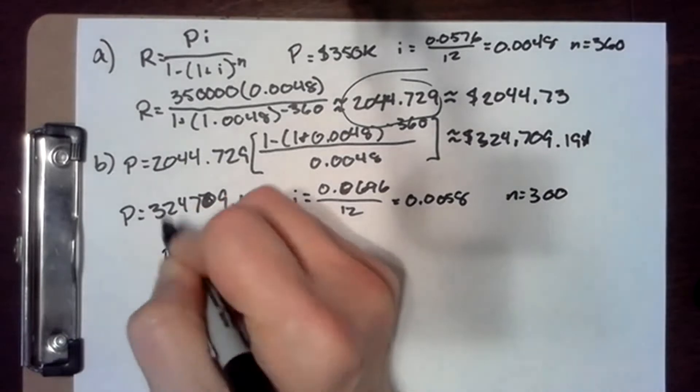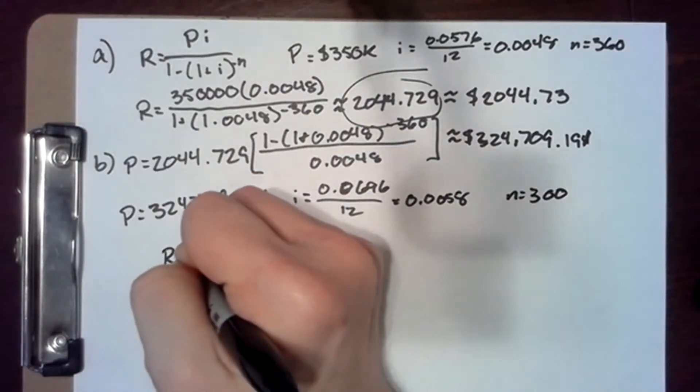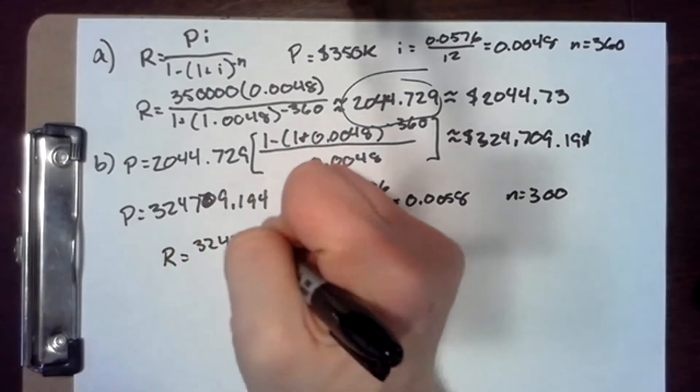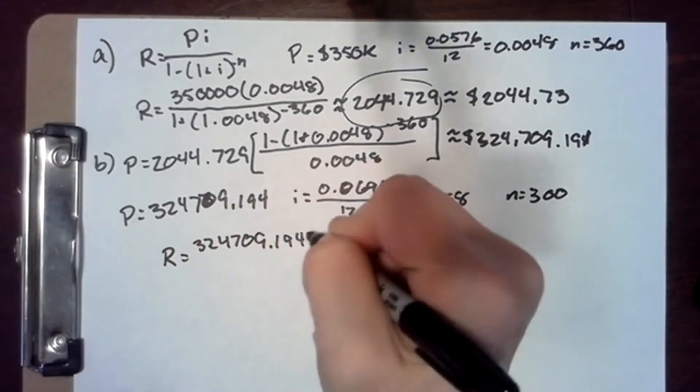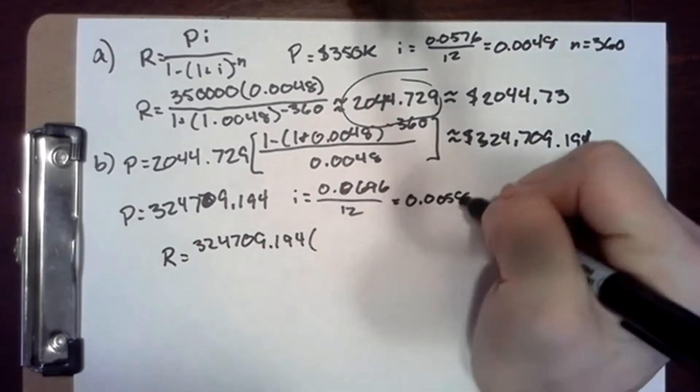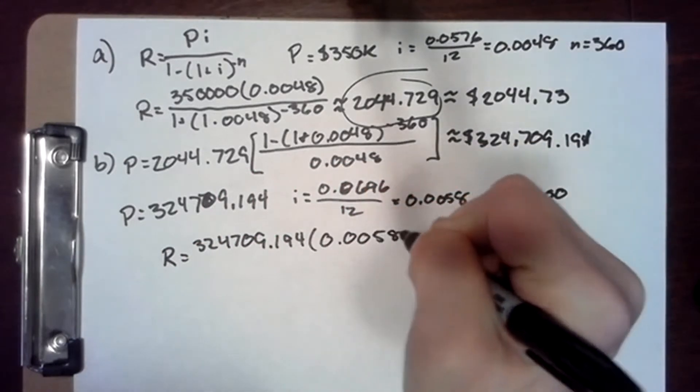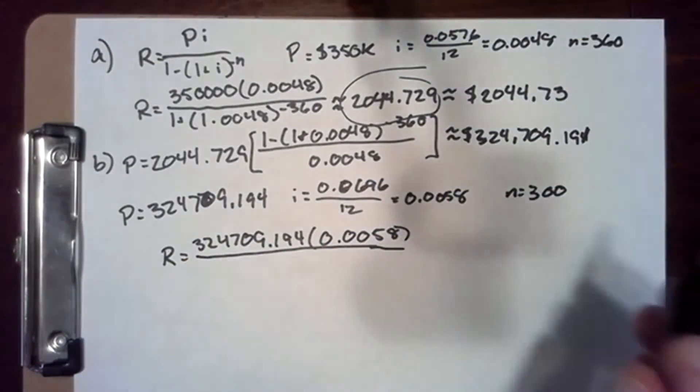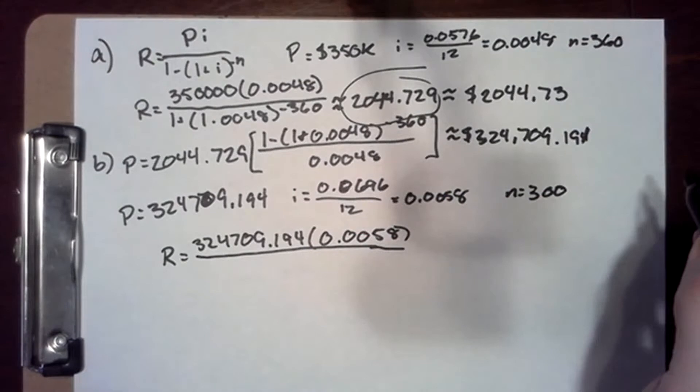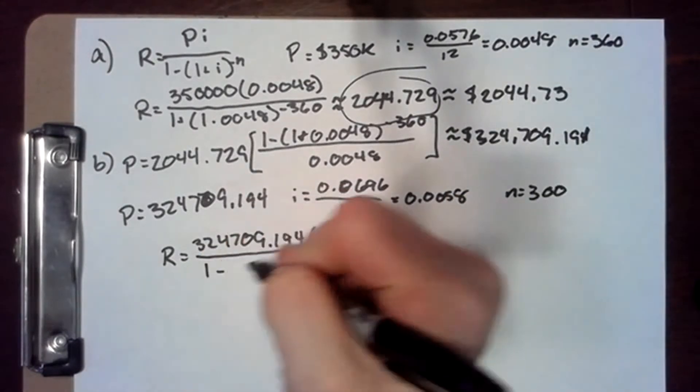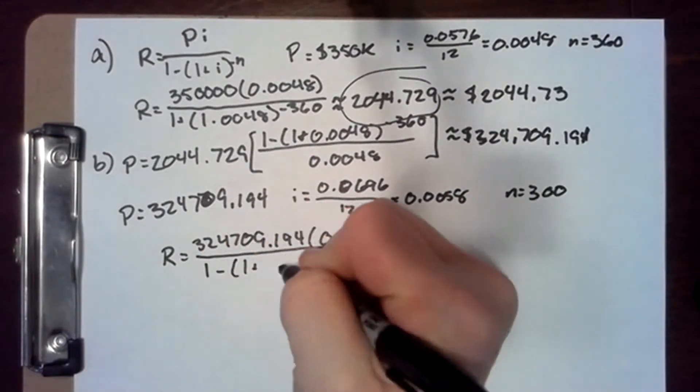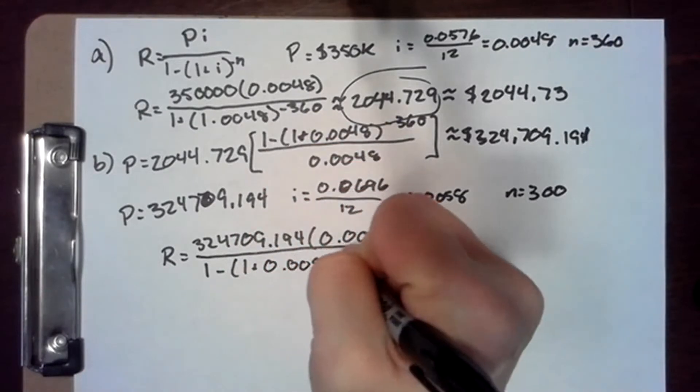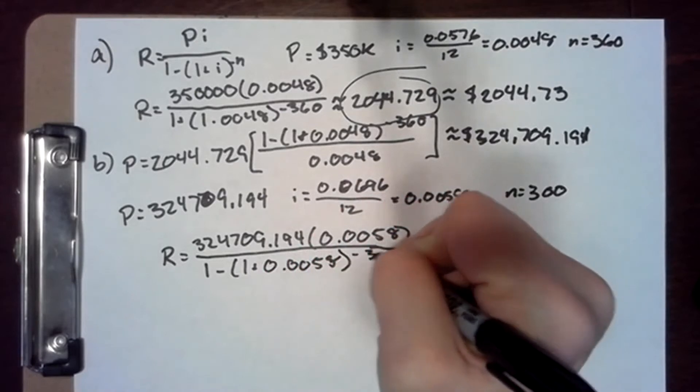Using our amortization formula, we have 324,709.194 times 0.0058 divided by one minus one plus 0.0058 to the negative 300.